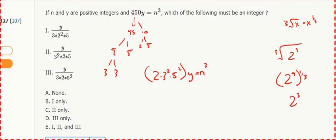So what does y need to be? Well, y is just completing the cube. We have one 2, but we need two more twos to get to three twos. So y needs to be 2 squared. We have 3 squared, we need one more 3. We have 5 squared, we need one more 5.